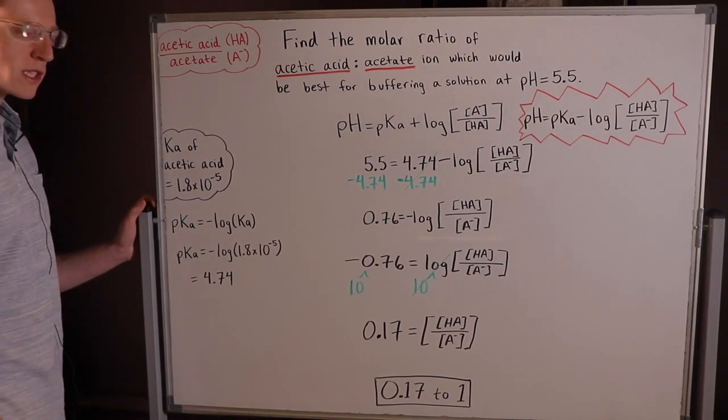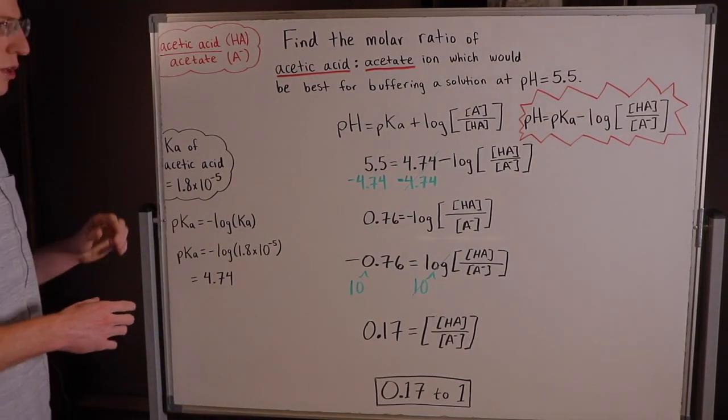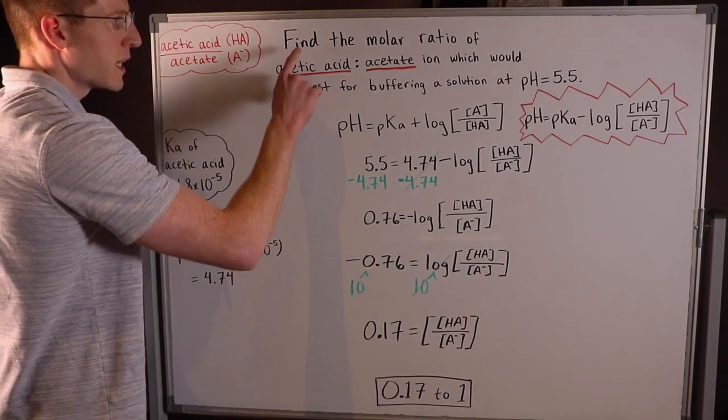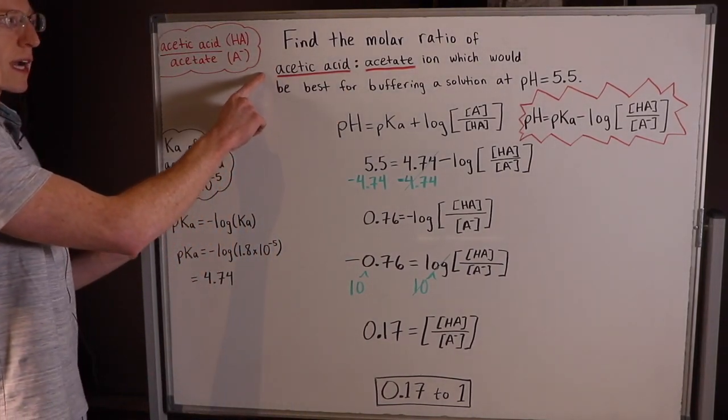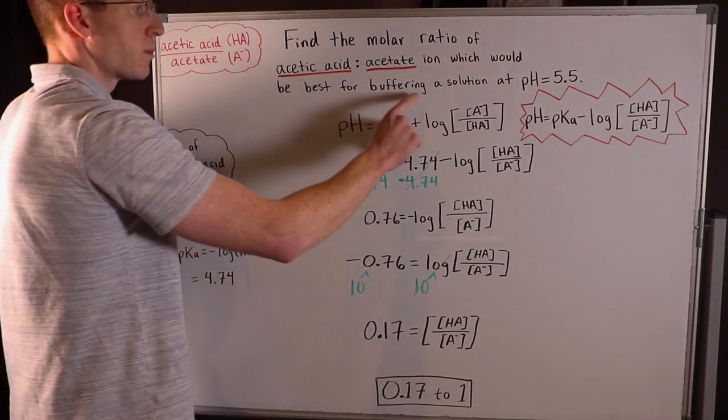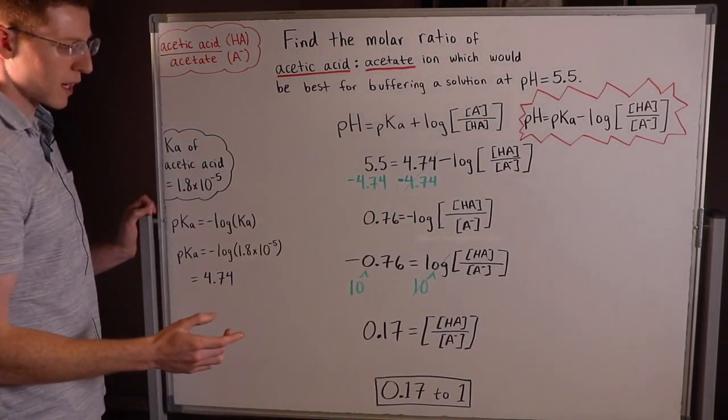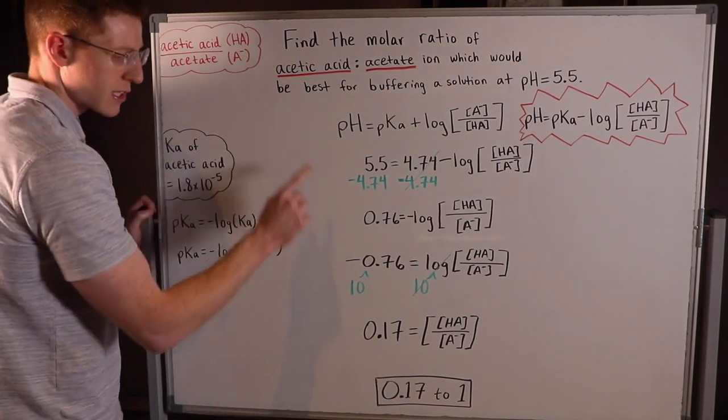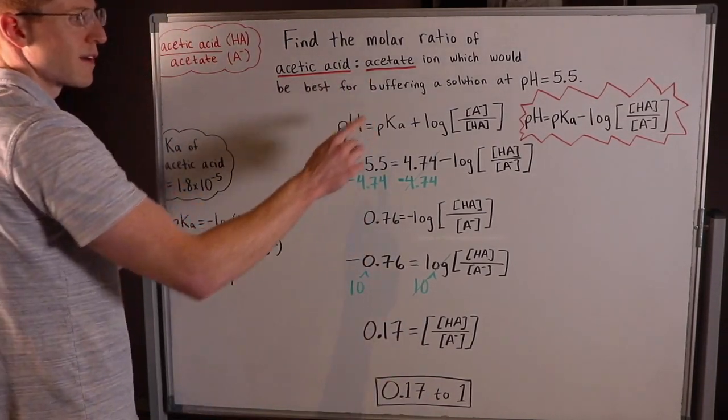And you end up with 0.17 equals the ratio of acetic acid to acetate. This means that the best molar ratio of acetic acid to acetate ion that would be best for buffering a solution of pH 5.5 is 0.17 moles of acetic acid to 1 mole of acetate.